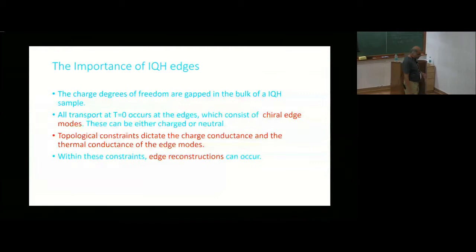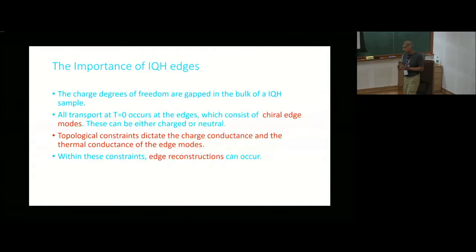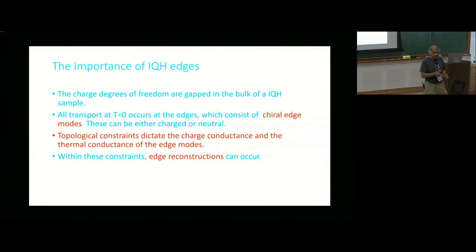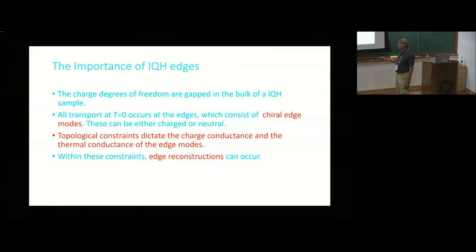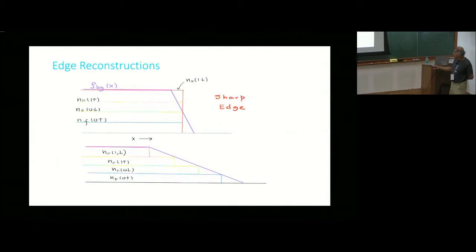Mitali and David already mentioned there are a couple of constraints on the structure of the edge. One is that the total Hall conductance, no matter what happens to the edge, must reflect what is happening in the bulk. The second constraint is that the total thermal Hall conductance should also be quantized and should also be a function of the bulk properties — that's a little more complicated. Subject to one of these two constraints, many, many things can happen.